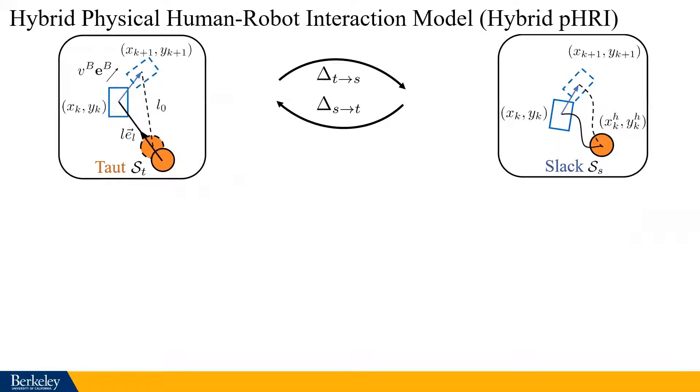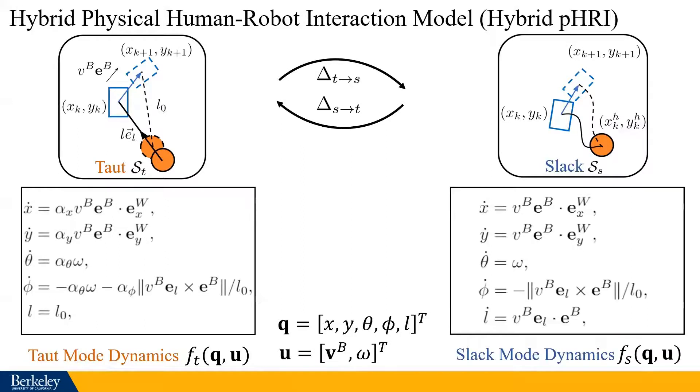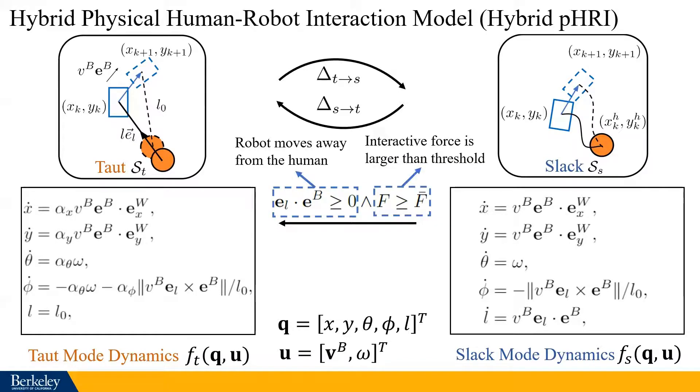Since the leash can go either slack or taut, this makes the robot leading human system hybrid. The virtual input to this system includes the robot velocity and the turning yaw rate. When the leash is taut, there is an internal force in the leash. We assume that the human will move along the leash direction while the leash length keeps being fixed. When the leash goes slack, the leash length is varied below the original and we assume that human won't move because there's no tension in the leash. The mode will switch from slack to taut when the robot is moving away from the human while the interactive force is larger than a certain threshold. And if the robot and the human are approaching to each other or the leash force is below the threshold, the leash will go slack again.